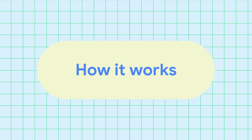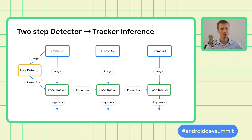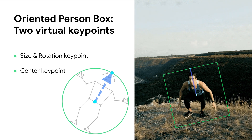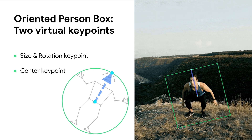Let's have a look under the hood and see how it works. Our pose detection API is a two-step pipeline consisting of a pose detector and a pose tracker. In the first frame, we run a detector which locates a rough area around the person called PersonBox. If the person is found, we run the tracker model for that PersonBox area, which detects accurate locations for all keypoints. For subsequent frames, we estimate the PersonBox based on keypoints from the previous frame. The pose tracker model also predicts if a person is located in the PersonBox — if not, we restart with the detector. PersonBox is oriented, encoding not only position and scale but also rotation, encoded via two auxiliary keypoints predicted by both detector and tracker.